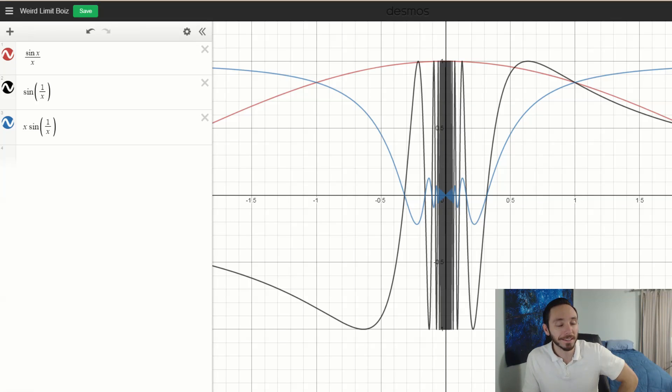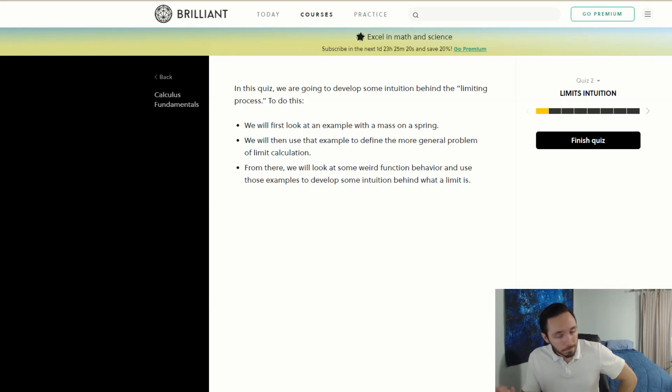The one issue with limits though really came down to the weird boys. This is where things got strange. Sine x over x, sine of one over x, and x times sine of one over x - these were the weird ones as you approach zero. So I'm actually happy that Brilliant chose these three functions. It's called Limits Intuition as a little module.